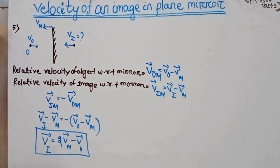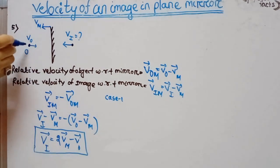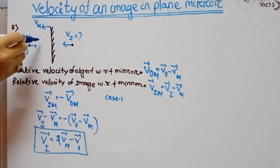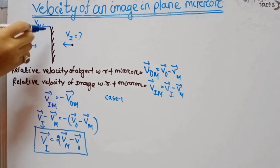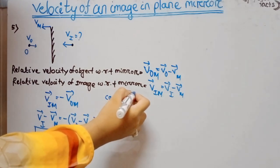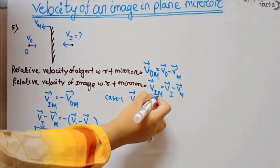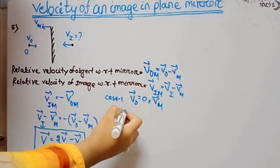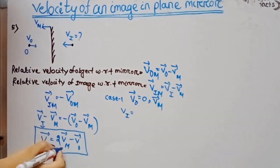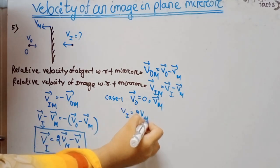Case 1: If the object is at rest (Vo = 0) and the mirror moves with velocity Vm, then Vi = 2Vm - 0 = 2Vm. The velocity of the image is twice the velocity of the mirror.